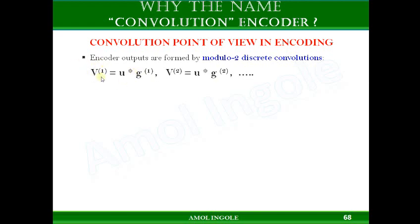That means if a certain convolution encoder has two outputs, v1 and v2, output v1 can be obtained by convolving the input bit stream u with the generator sequence g1. Similarly, output v2 of the encoder can be obtained by convolving the input bit stream u with generator sequence g2.